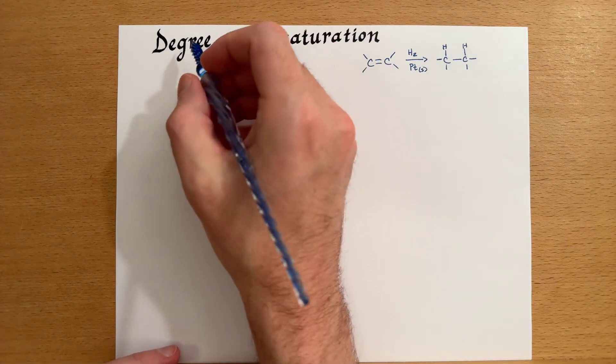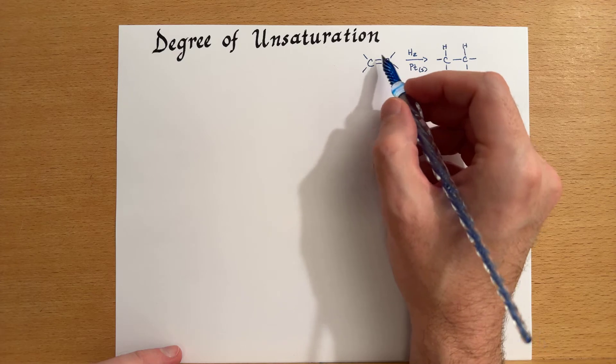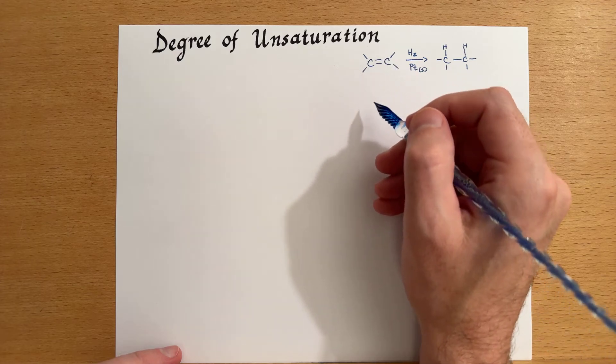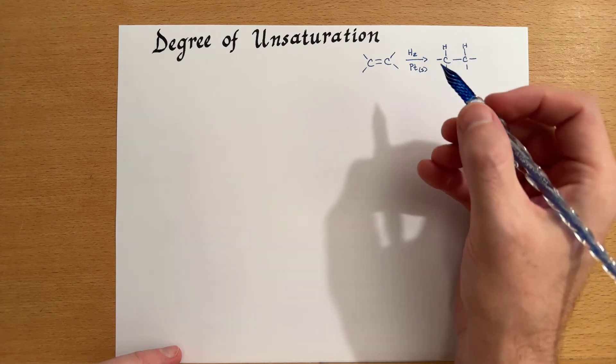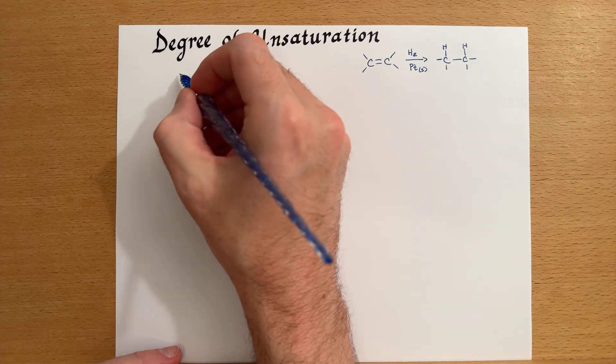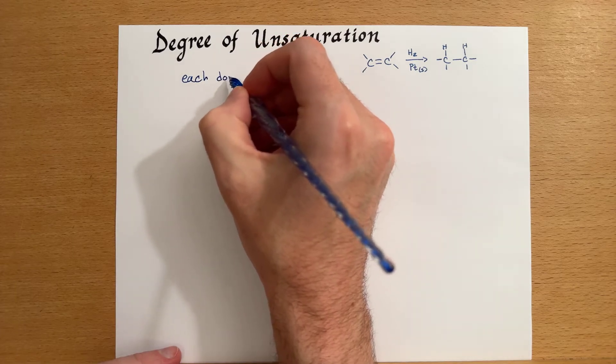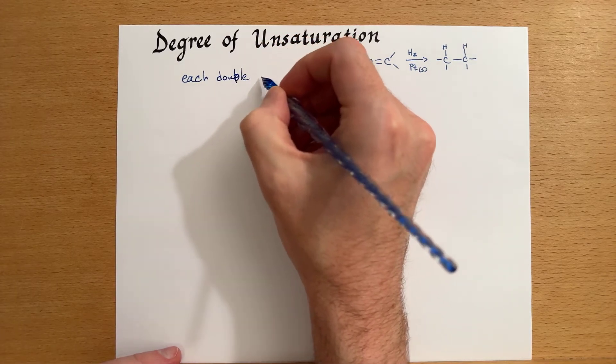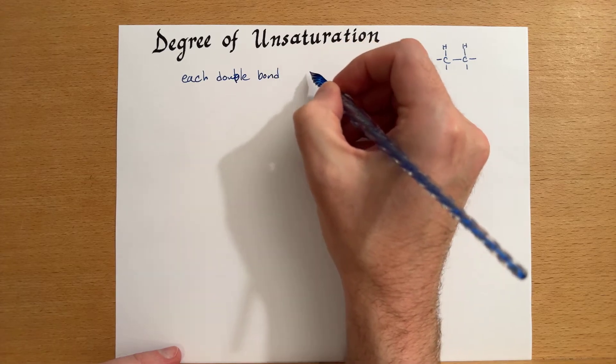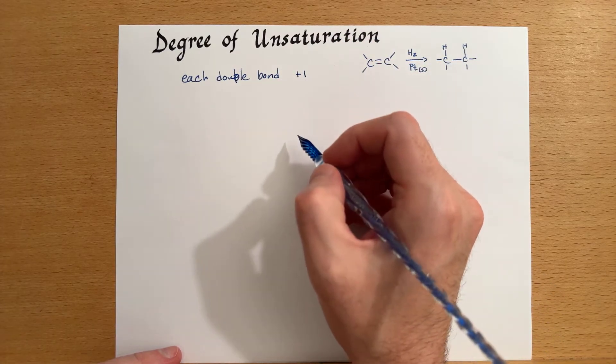So let's talk about how this works. For each double bond, we can add a degree of unsaturation. So we add one degree of unsaturation.